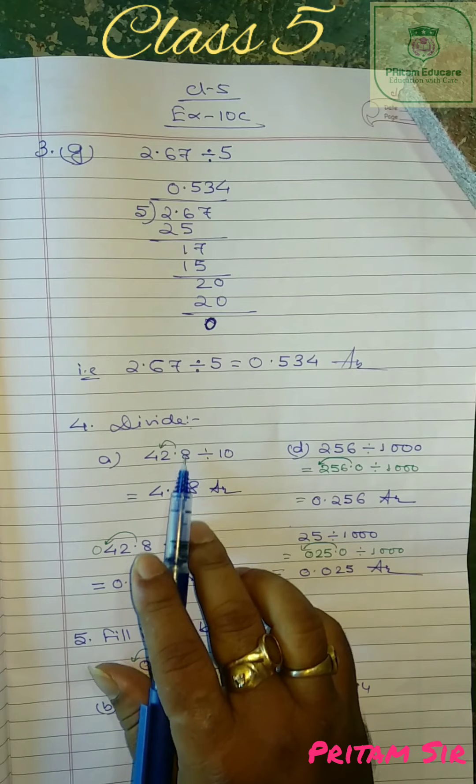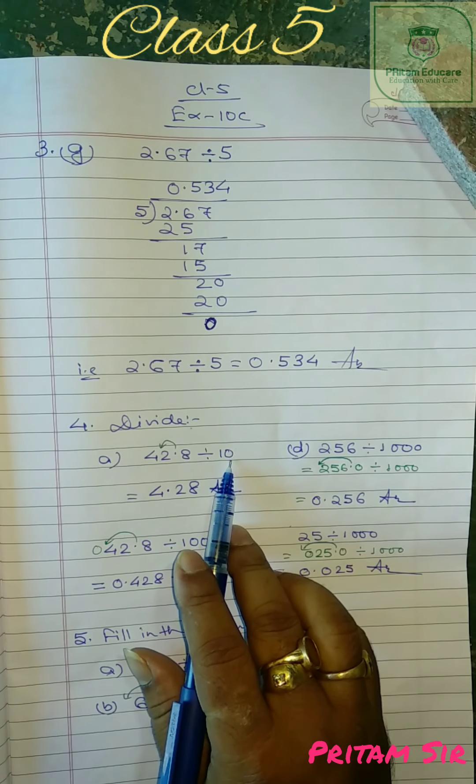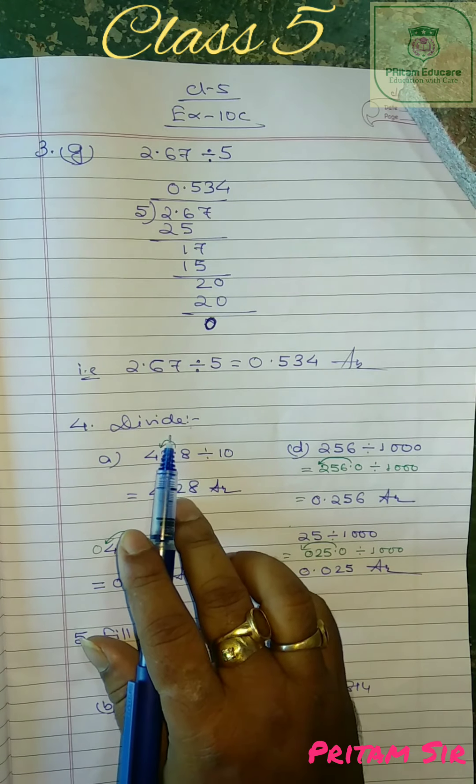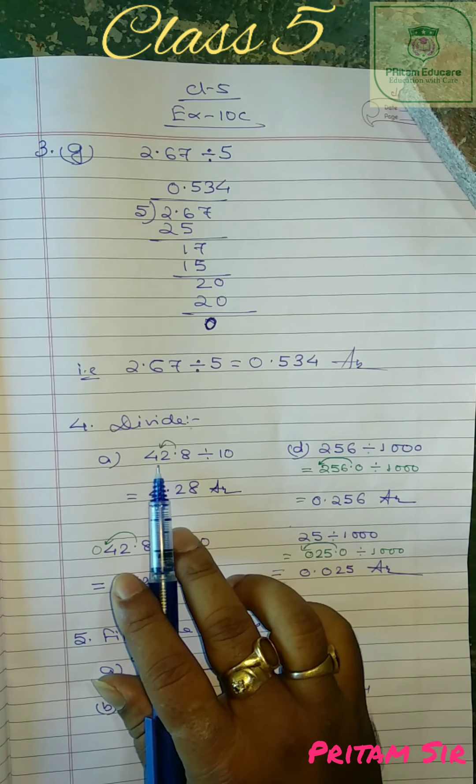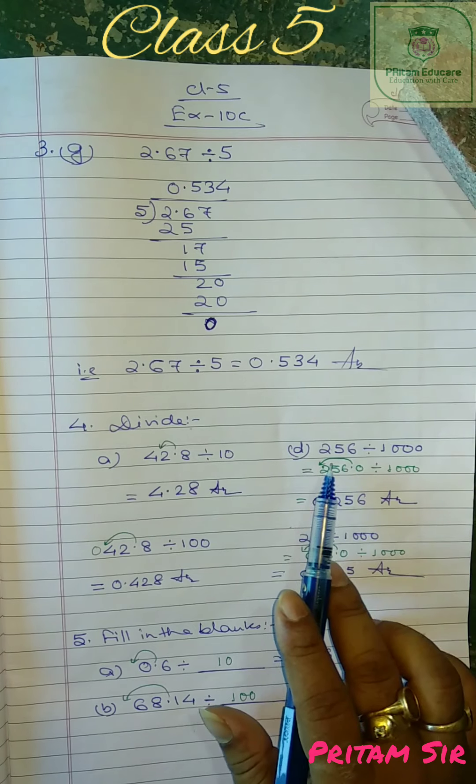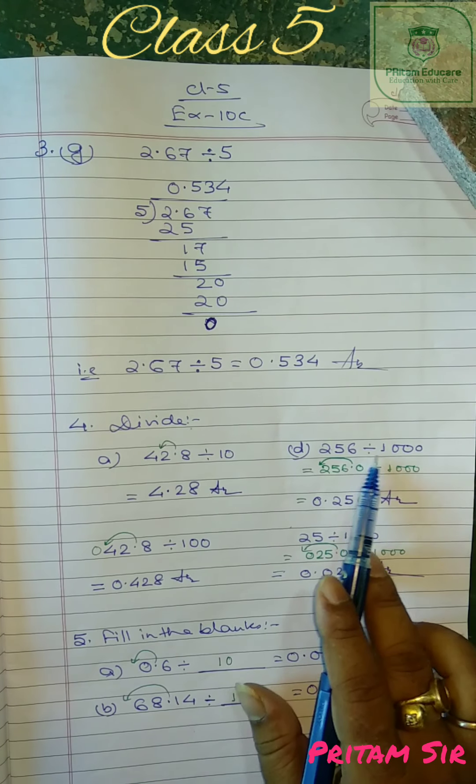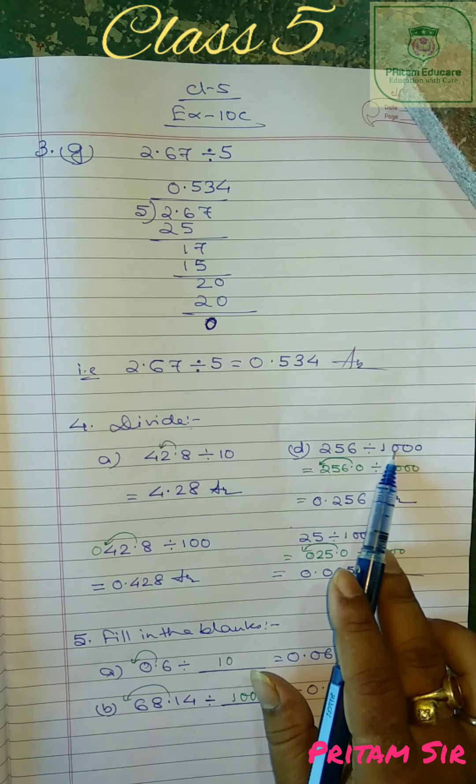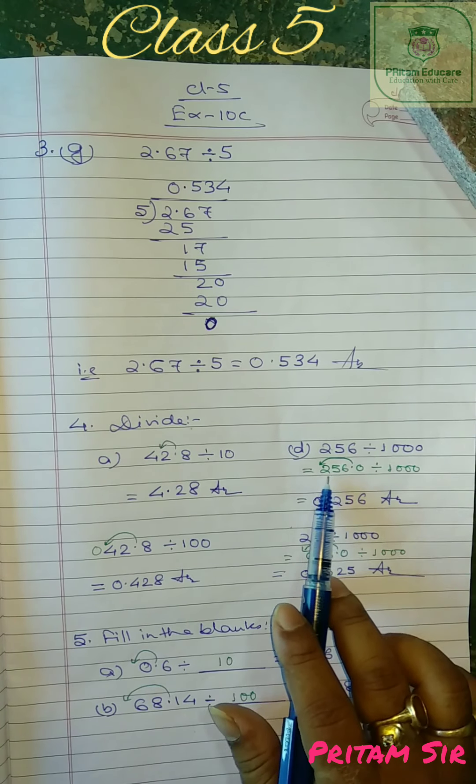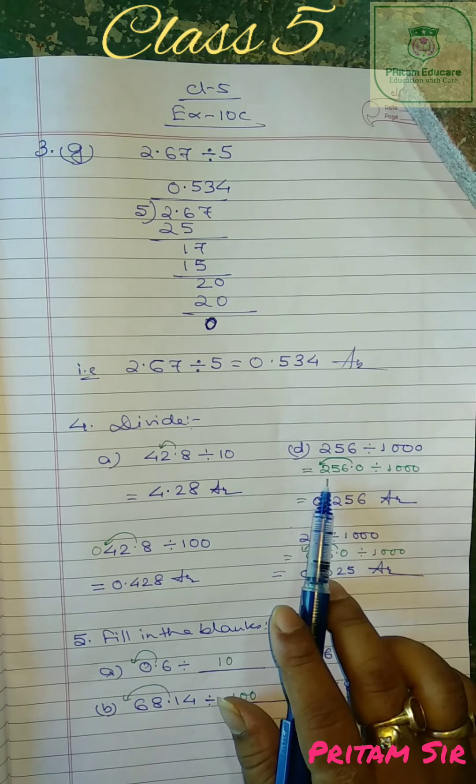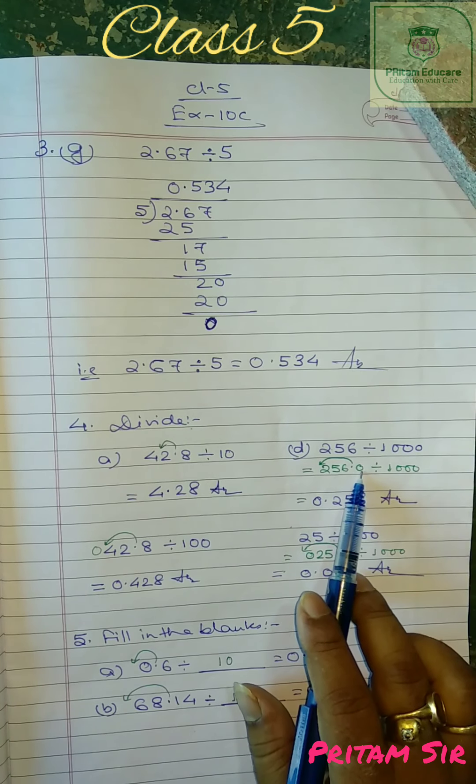So here you see 42.8 divided by 10, we have 1 zero. So decimal will shift to left side one digit. So 4.28. Now see D number 256 divided by 1000. We have three zeros here. And we do not have any decimal numbers. So we have converted this one into decimal number as 256.0.